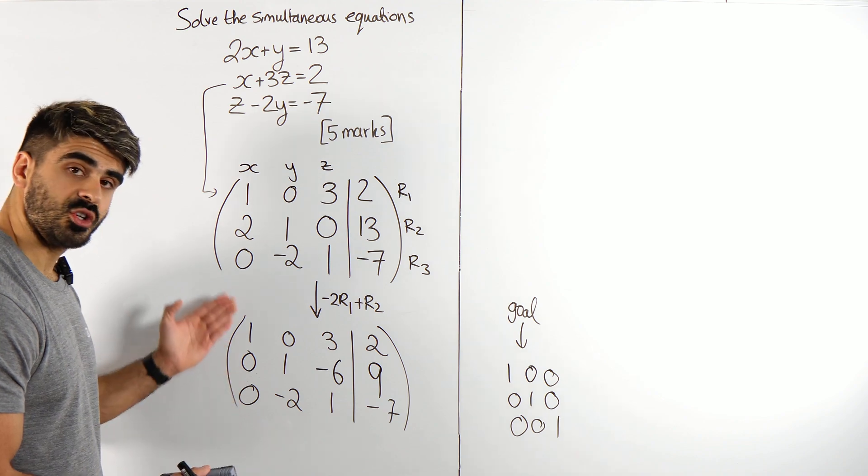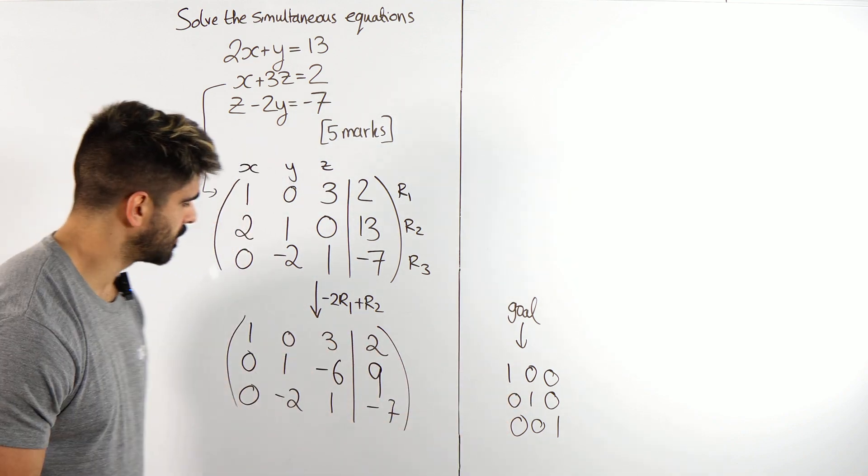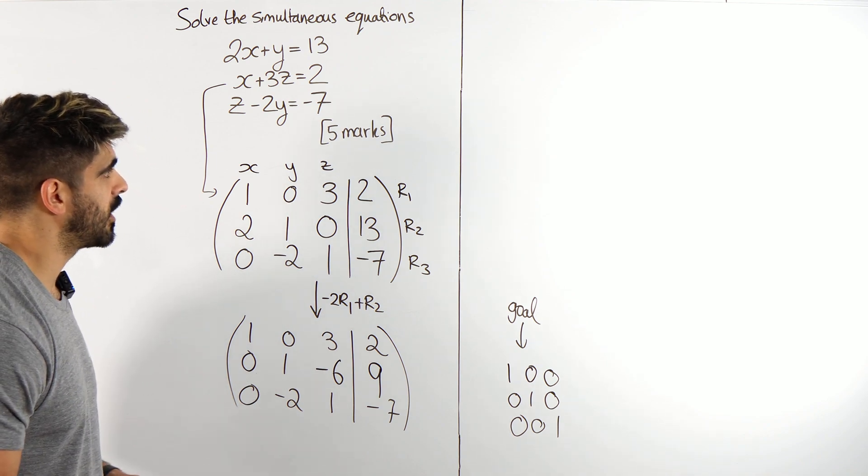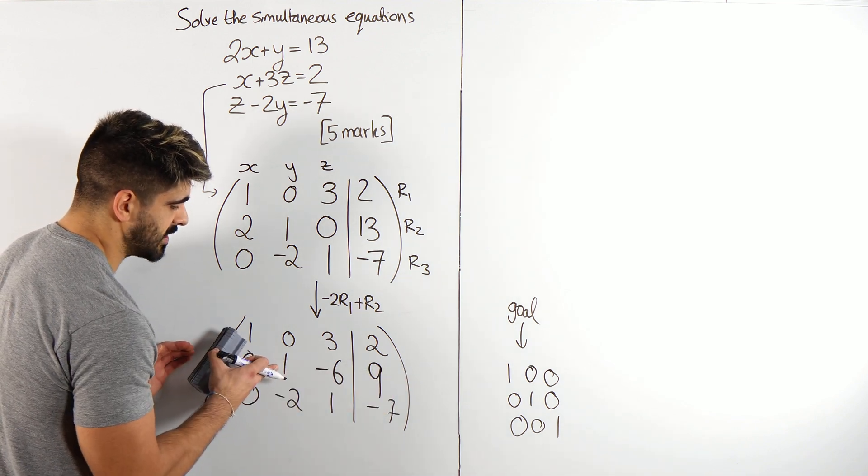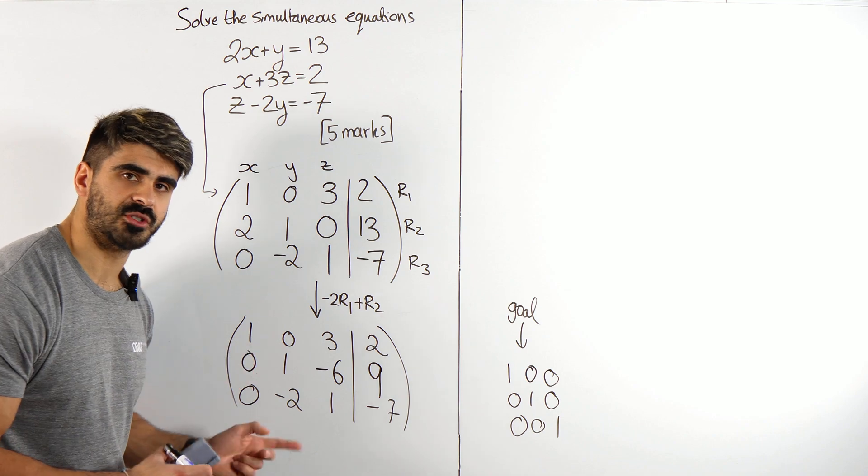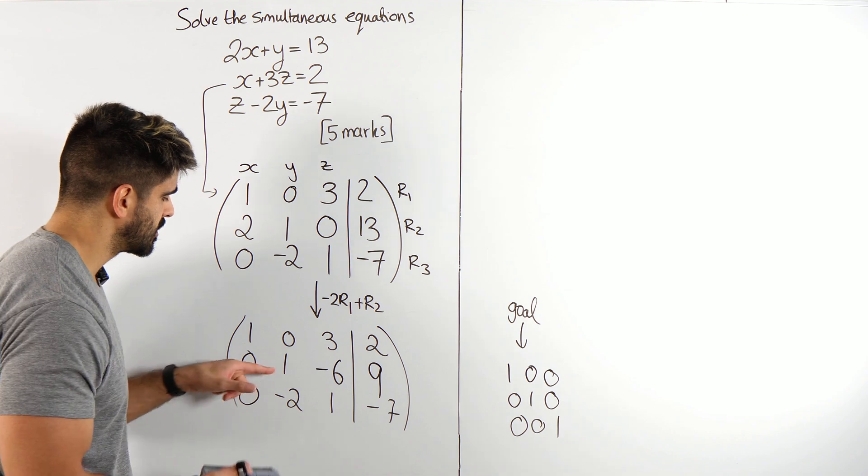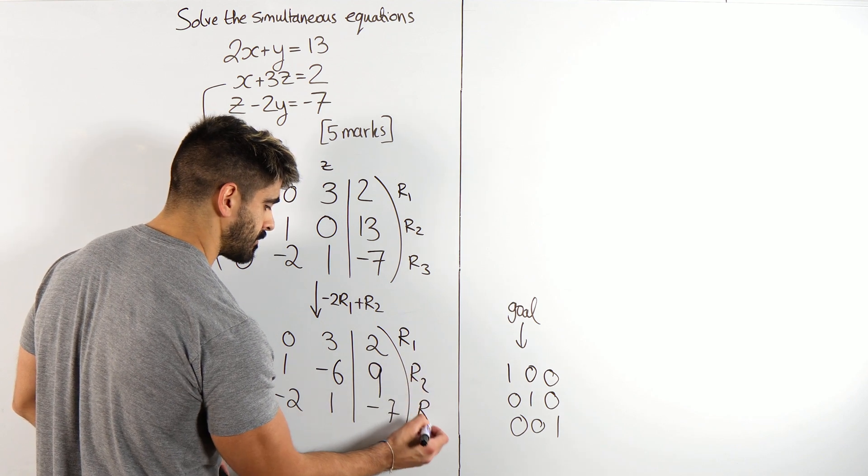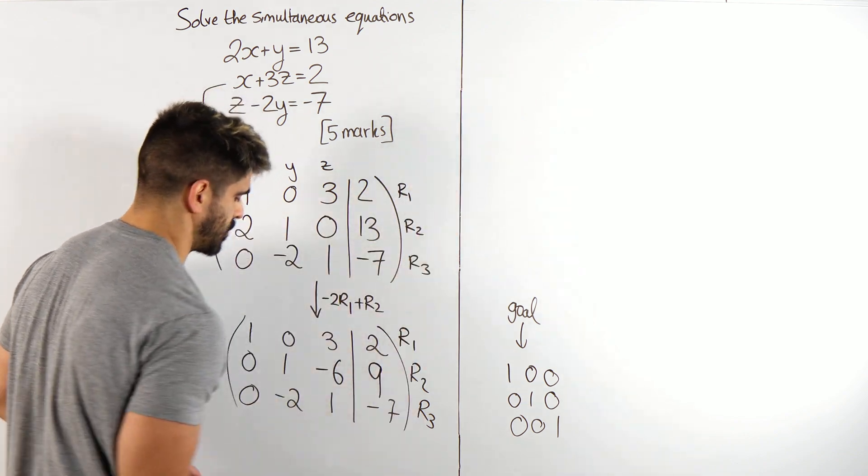So this first column is done. We've got the second column. I want 0, 1, 0. I have a minus 2. It's not looking good. What do I need to do? Well, I'm going to use row 2, which has the 1. This is my new pivot. I'm going to use that to change that into a 0. Because you can't use 0 to change any other number, because anything you time 0 by is just going to keep everything else the same.